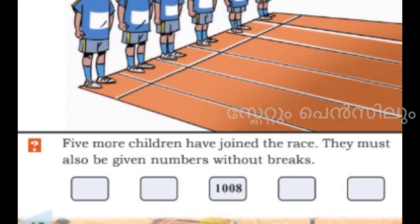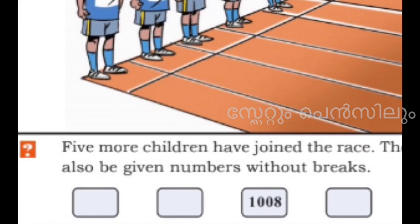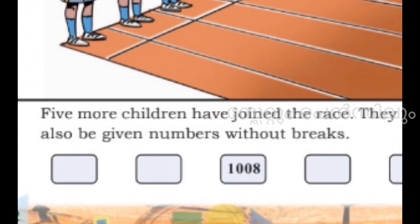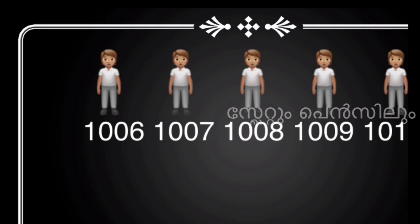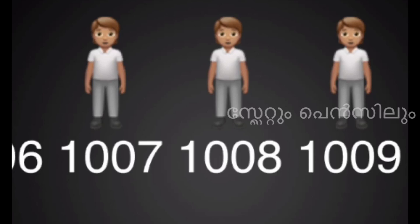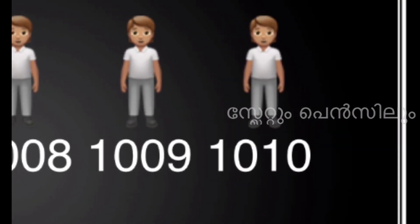Five more children have joined the race. They must also be given numbers without breaks. In your textbook, you can see 1008 is given to the third child. The rest of the numbers: 1st child 1006, 2nd child 1007, 1008, 1009, 1010. Completed.